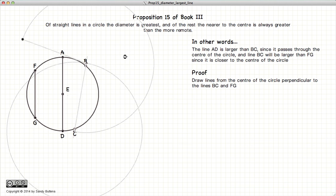For our proof, first we will draw our lines perpendicular to the chords. EK is perpendicular to FG and EH is perpendicular to BC.